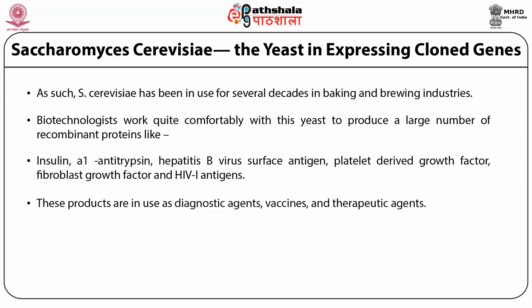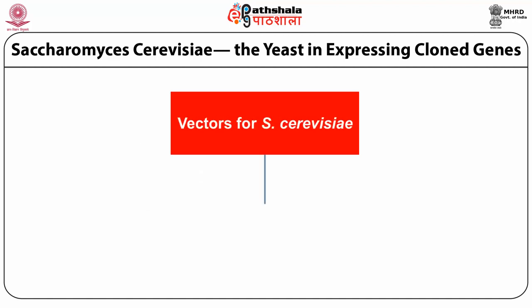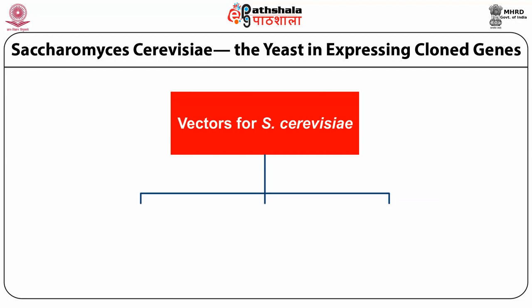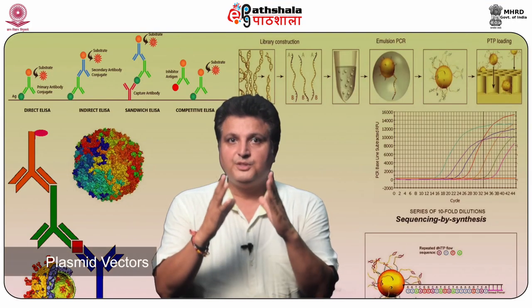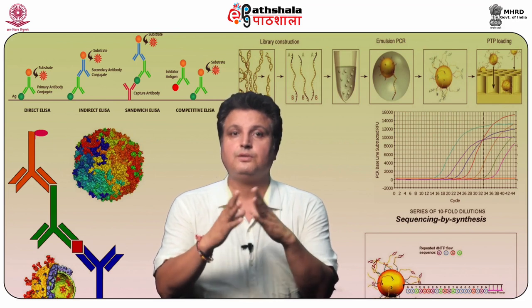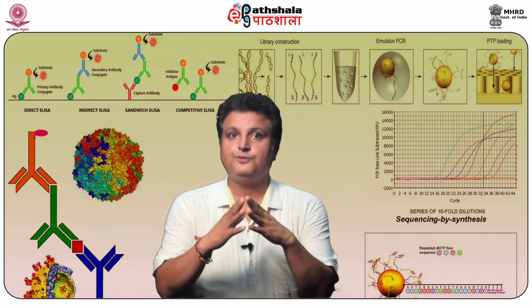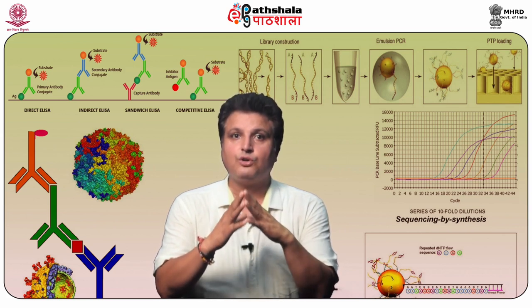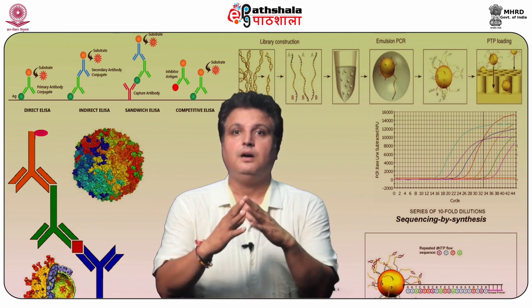These products are in use as diagnostic agents, vaccines, and therapeutic agents. Vectors used for Saccharomyces cerevisiae include plasmid vectors, integrating vectors, and yeast artificial chromosome vectors. Among vectors, plasmids with single cloned genes are widely used. Manipulation with growth conditions increases vector stability and expression efficiency. Use of tandem gene arrays has not met with success since they are unstable.